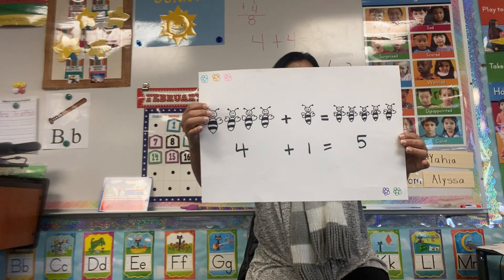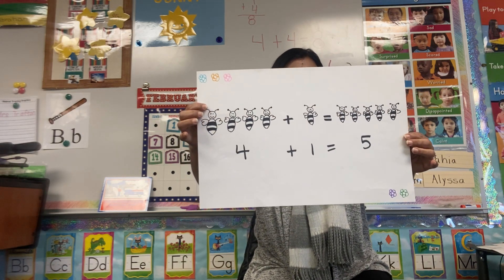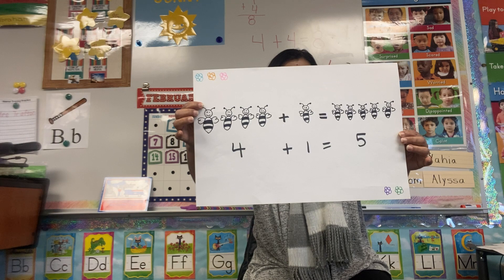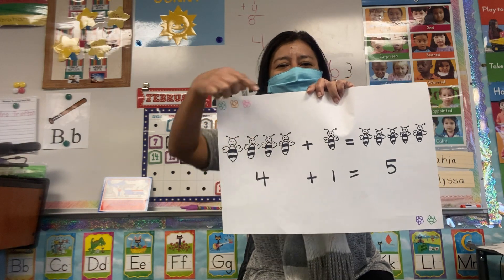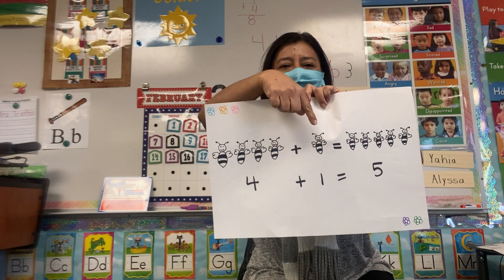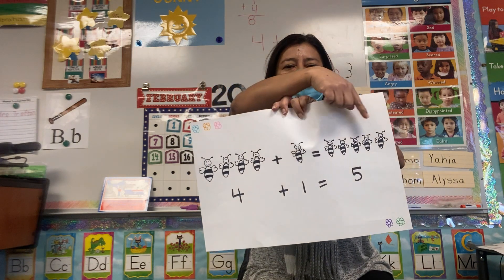Okay, four little bees going to the hive. Spied their little brother, and that made five. Four bees plus one equals five.